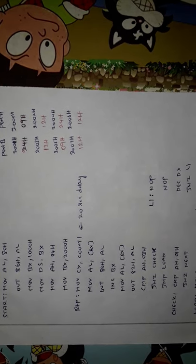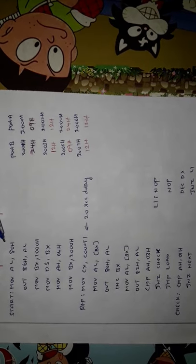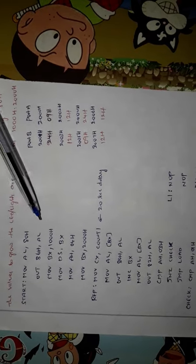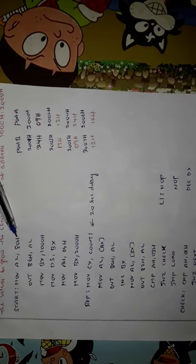First, we set up the 8255 in basic IO mode with port A and port B in mode 0 as output ports, since we are writing data to the traffic lights. The control word written to the control register at address 86h is 80h. Writing 80h to address 86h configures the 8255 to operate in basic IO mode with ports A and B as output ports.